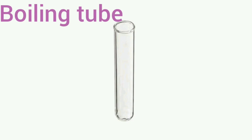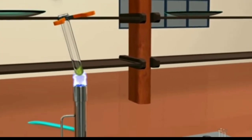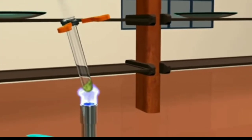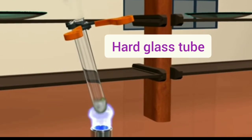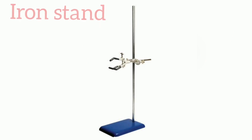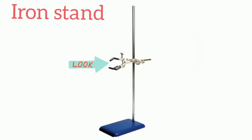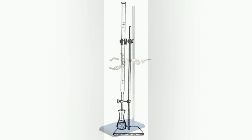A boiling tube is a special type of test tube which is slightly bigger and is made of heat-resistant borosilicate glass. It is used for heating substances at high temperatures and is also called a hard glass tube. An iron stand is an iron platform with an iron rod and one or two clamps. It is used to suspend and hold apparatuses like flasks, funnels, etc.